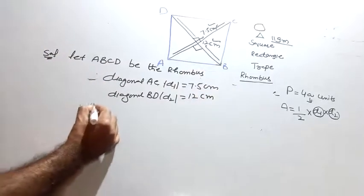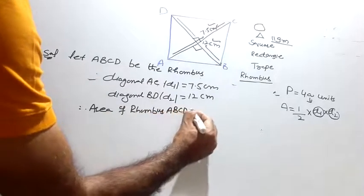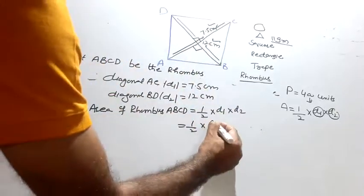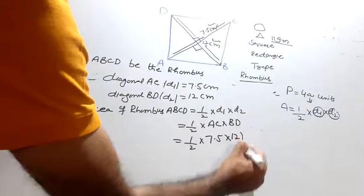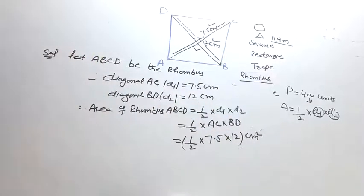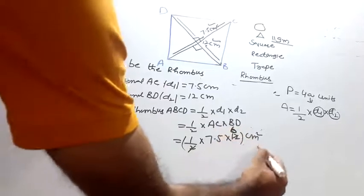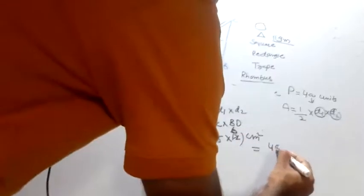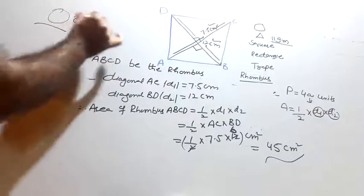Therefore, area of rhombus ABCD is half into d1 into d2. Half into AC into BD. AC is 7.5 into BD that is 12 gives centimeter square. Half into 6 into 7.5 gives 45 centimeter square. This is the area. Question number five is complete.